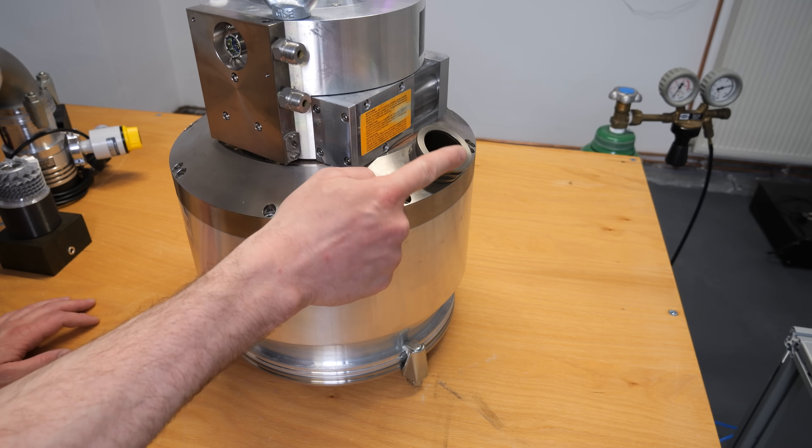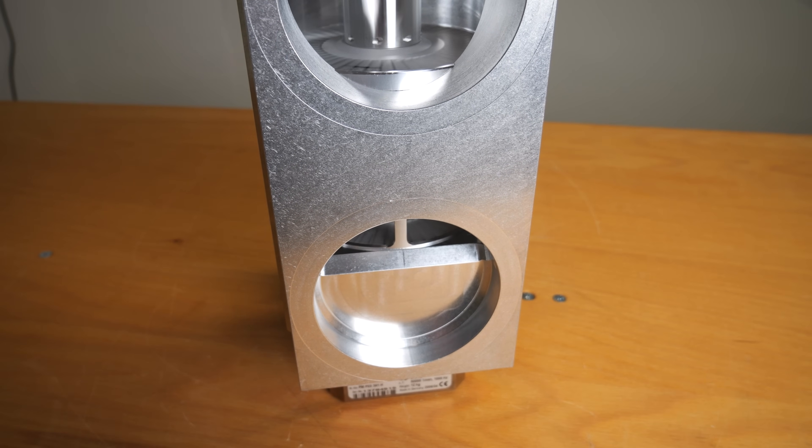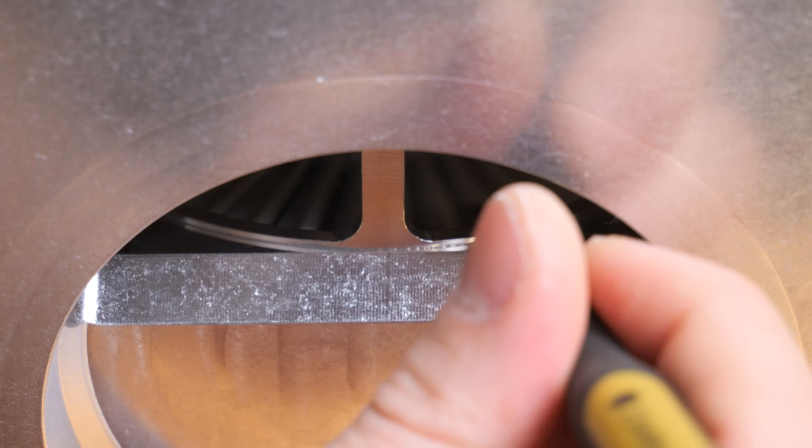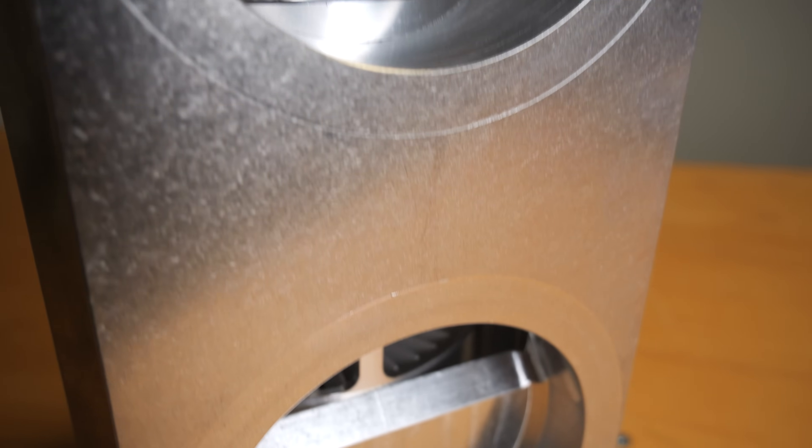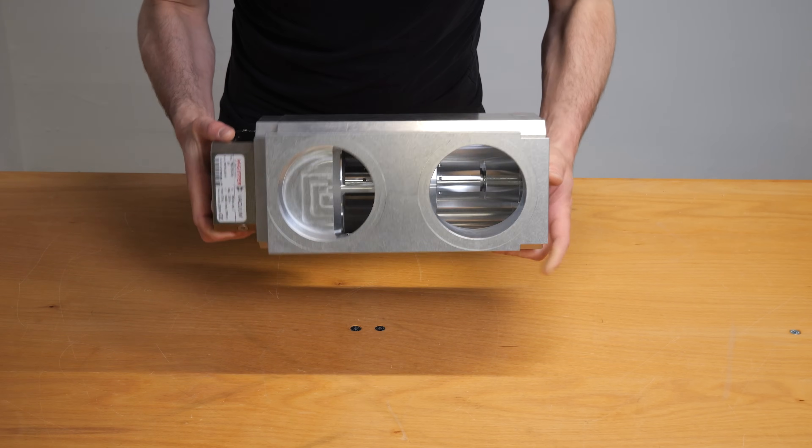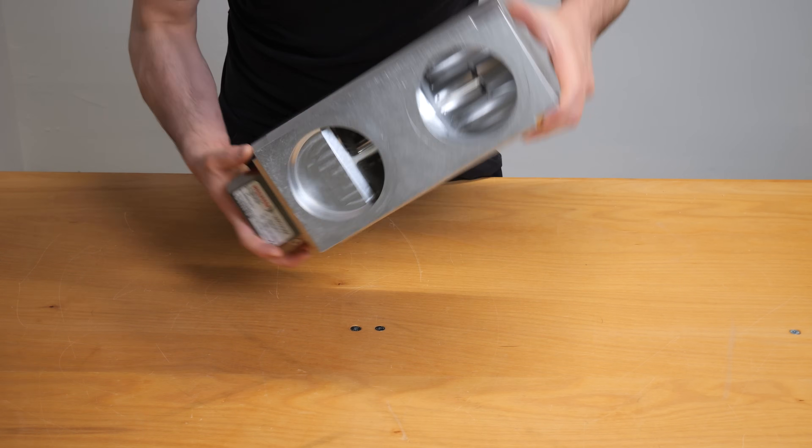A split flow pump is essentially a turbomolecular pump that has been split in the middle. The upper stages of the rotor are separated from the lower ones. As a result, the pump doesn't have one opening, but two. This allows achieving two different pressures with just one pump, as there is a lower pressure at the upper flange than at the lower one.